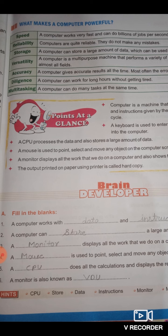Fourth is versatility — computers are multi-purpose machines that can perform a variety of tasks in almost every field. Computers can be used for making animation movies, designing, making and playing games, and much more. Fifth is accuracy — the computer always gives accurate results as long as we do not make mistakes in giving input. Sixth is diligence — a computer can work for long hours without getting tired, as it is immune to boredom and tiredness. Seventh is multitasking — a computer can do many tasks at the same time.